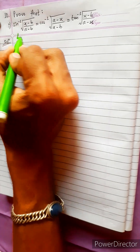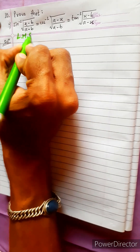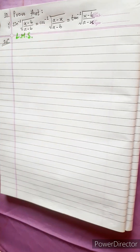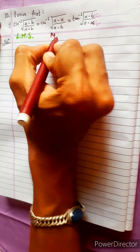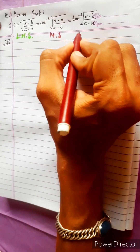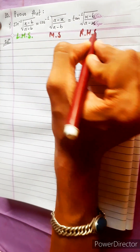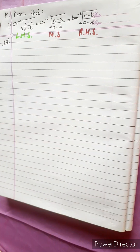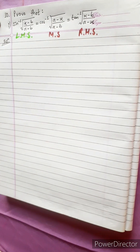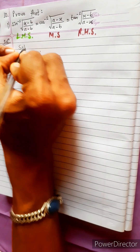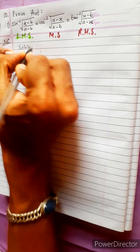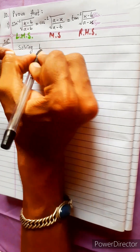Prove that LHS equals Middle Side equals Right Hand Side. We begin by solving the LHS.